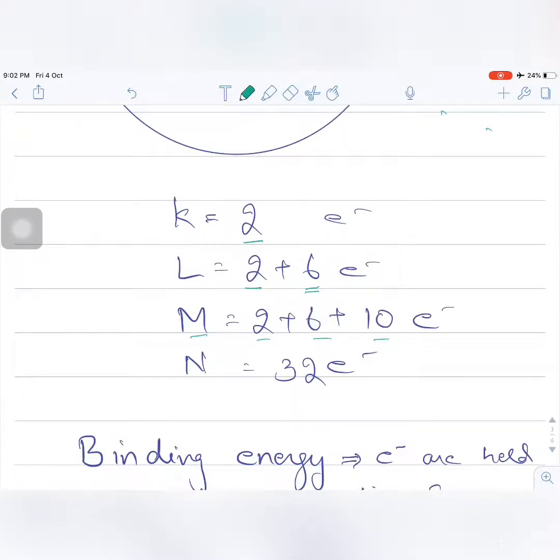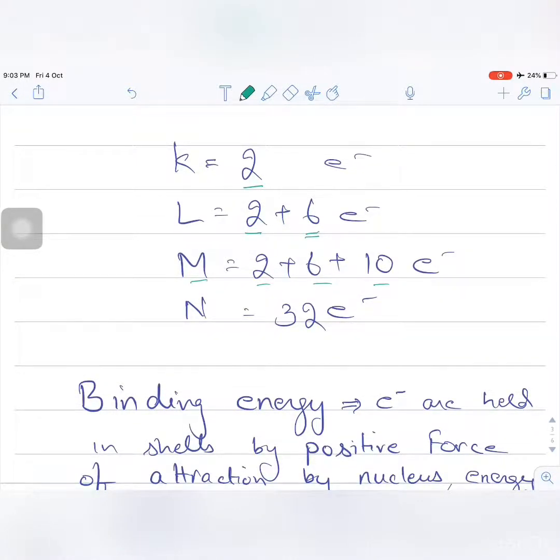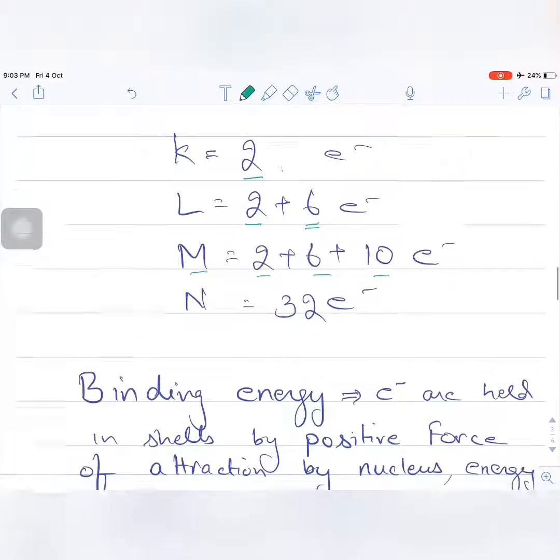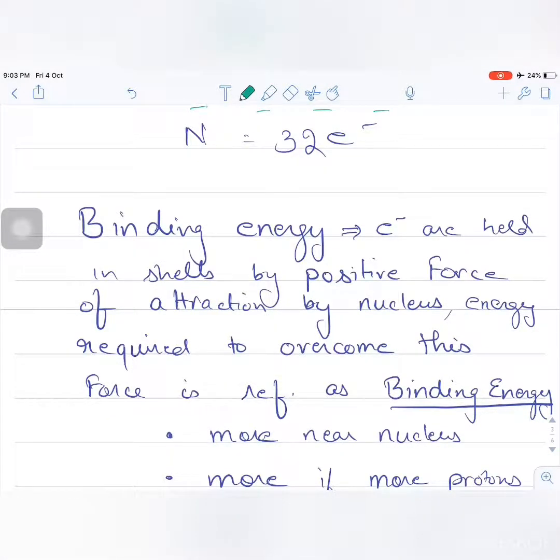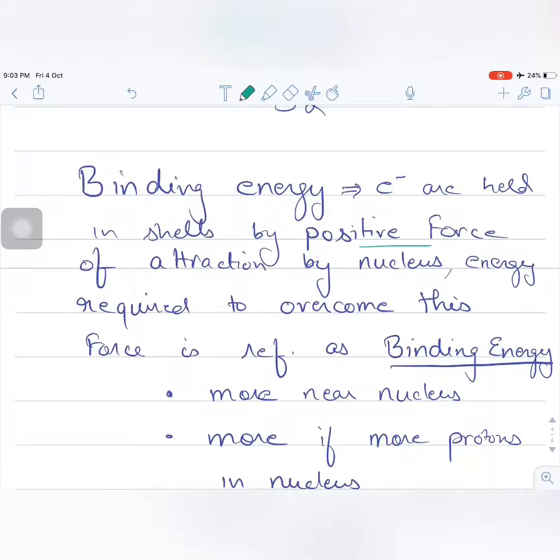After N, O shells usually have four sub-shells and 32 electrons in one shell. There is one more thing we need to understand: binding energy. Electrons are held in shells by positive force of attraction by the nucleus, and energy is required to overcome this force.